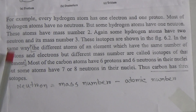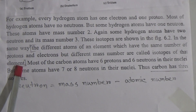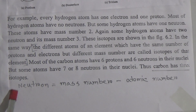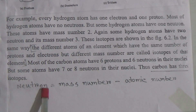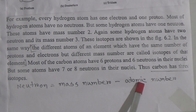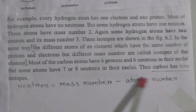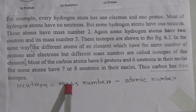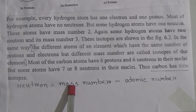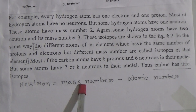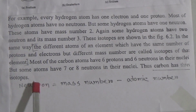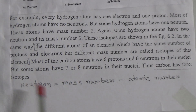Dear students, this is the definition of isotope and it is very important for you. The neutron number is equal to mass number minus atomic number. The atomic number is the number of protons of the atom, and the mass number is the number of protons added to the number of neutrons. So if we subtract the atomic number from the mass number, we will get the neutron number.